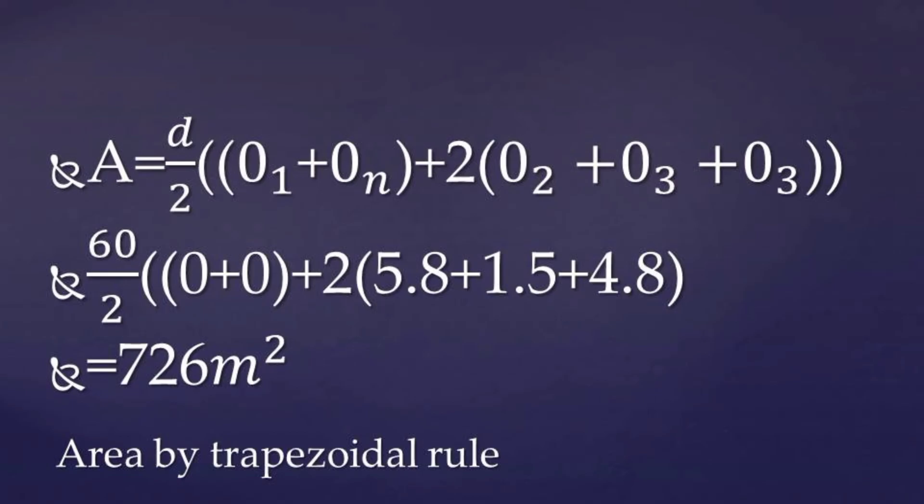In Simpson's rule, it requires even numbers of increments, where the trapezoidal rule can be used for either odd as well as the even number of increments.